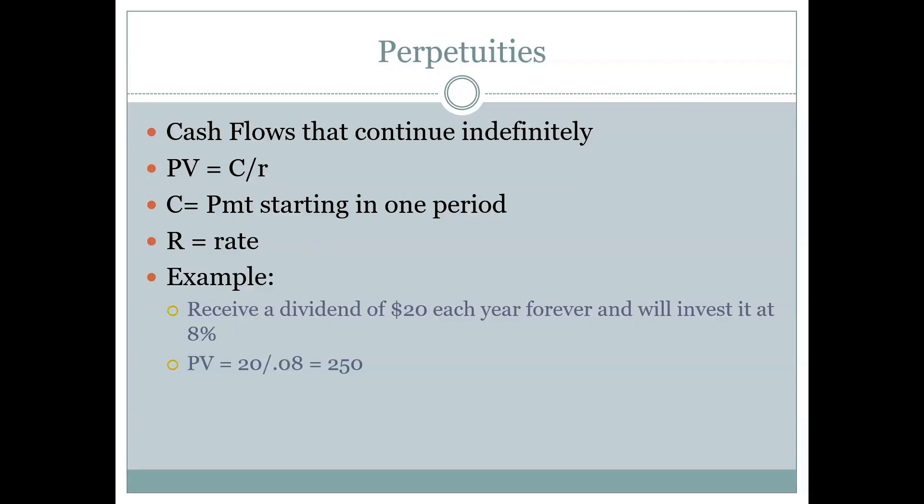The cash flows of a perpetuity are paid forever, which is not really realistic when we think about human lifetime — no cash flows can be paid forever. However, we'll talk about some scenarios where it may be more realistic to assume they go on forever rather than try to pick a finite end date. When we talk about stocks and companies, perpetuities are going to come up again. Math likes infinity, so a perpetuity is a financial asset with cash flows that go on for infinity.